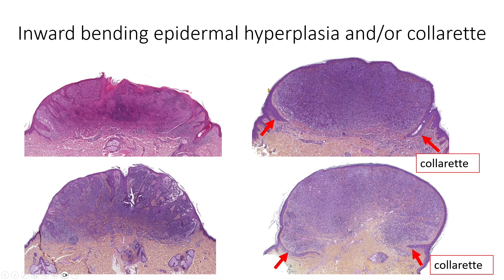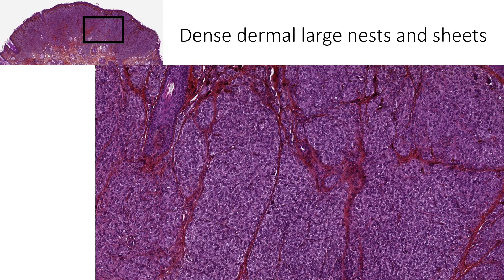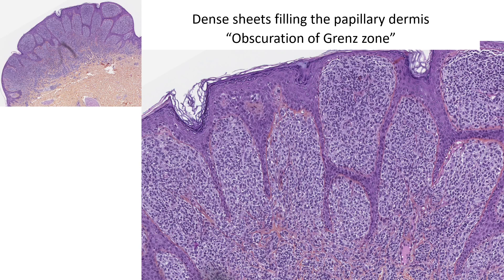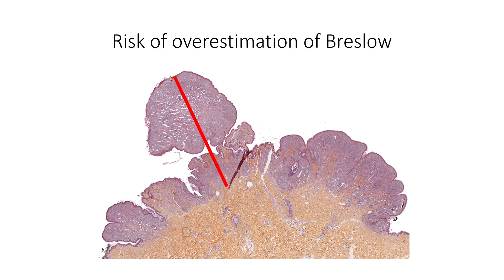Here are some illustrations of the border of the lesion. We can have this collarette of epidermis on both sides. A key element to the diagnosis is the high density of the dermal component with large nests or sheets of cells. This high density can even fill the grenz zone in many areas. When the papillomatous component is important, there is a risk of overestimation of the Breslow thickness.